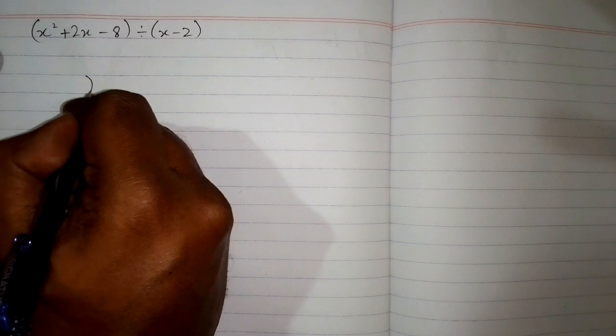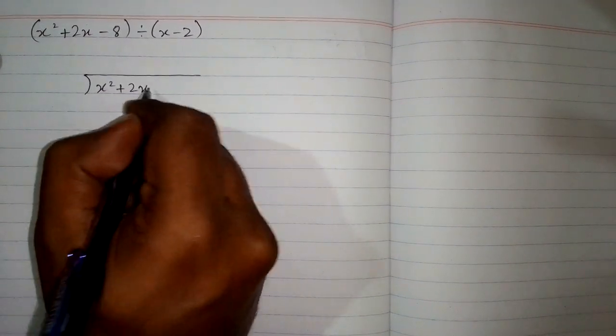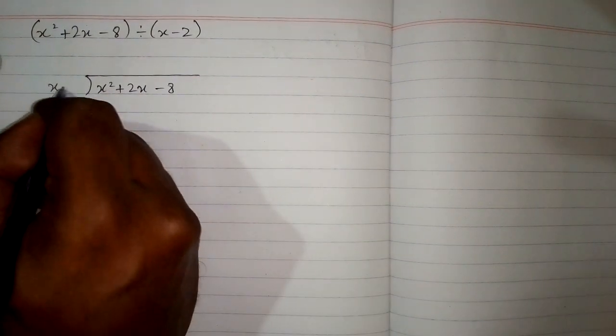First we will draw the structure for long division and put x square plus 2x minus 8 inside this structure, and we will write the divisor over here.